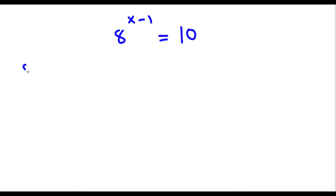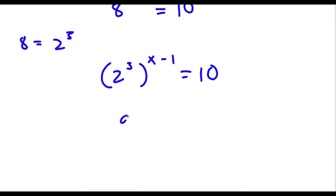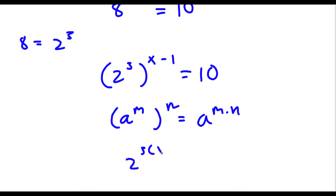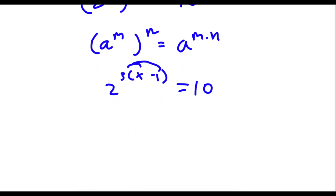Now 8 is the same thing as 2 to the power of 3. So if I replace 8 with 2 to the power of 3, I get 2 to the power of 3 to the power of x minus 1 is equal to 10. Using the rule a to the power of m to the power of n equals a to the power of m times n, I get 2 to the power of 3 times x minus 1. Now I can distribute the 3: 3 times x is 3x, and 3 times negative 1 is negative 3, so I have 2 to the power of 3x minus 3 equals 10.